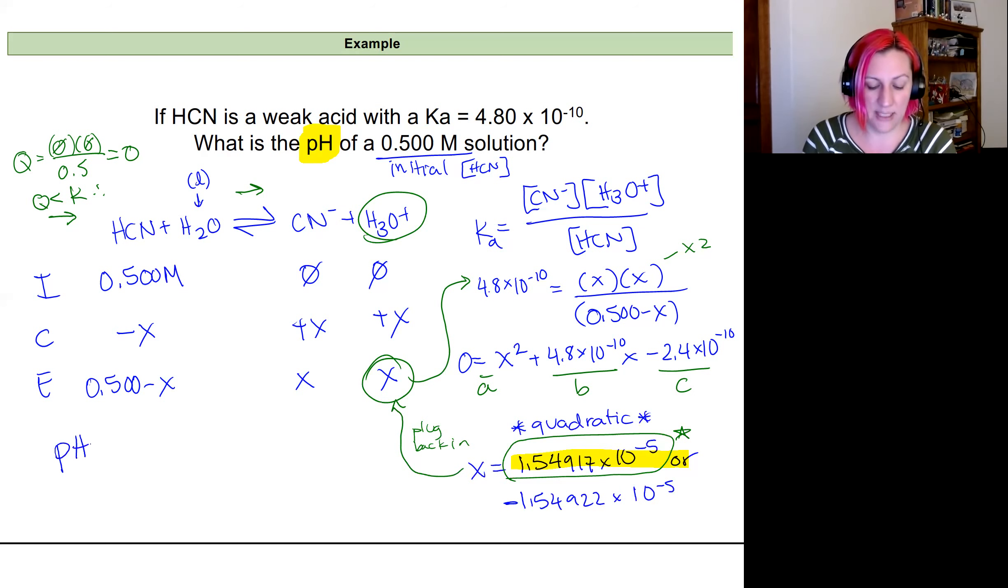So that pH is going to be equal to the negative log of H3O plus. So that H3O plus is X at equilibrium. So this is going to be equal to the negative log of 1.54917 times 10 to the negative fifth, and plugging that into my calculator. I get a value that is 4.8.